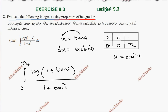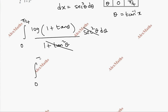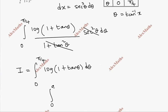The new integral becomes: integral from 0 to π/4 of log(1 + tan θ) divided by (1 + tan²θ), times sec²θ dθ. The sec²θ and (1 + tan²θ) cancel. Now applying the property: integral from 0 to a of f(x)dx equals integral from 0 to a of f(a minus x)dx.